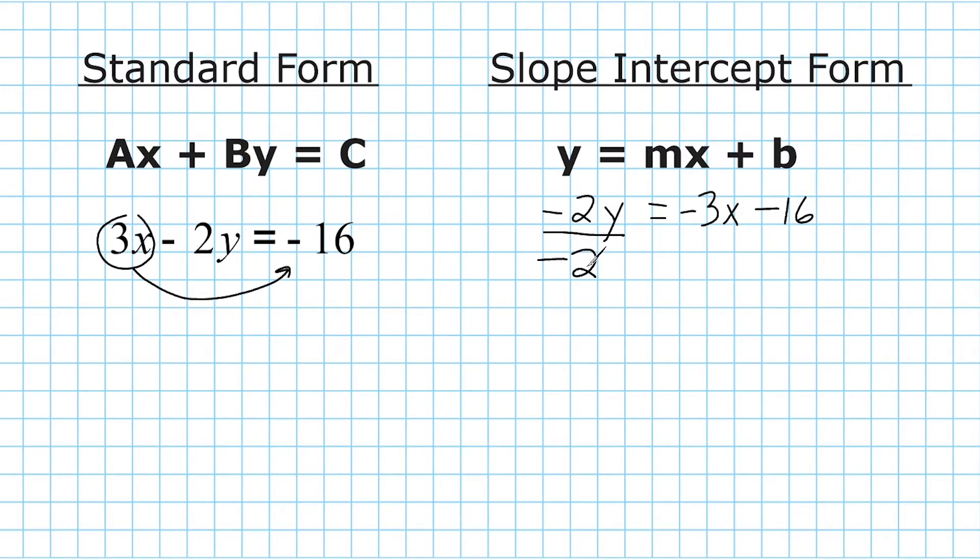Now, to balance our equation, we have to divide everything on the other side by negative 2. So negative 2 divided by itself is positive 1, so that gives us just a y on the left-hand side of our equation. And now we have to divide both of these terms by negative 2. So we're going to take negative 3 and divide that by negative 2, and that would be positive 3 halves. We just keep it as an improper fraction.